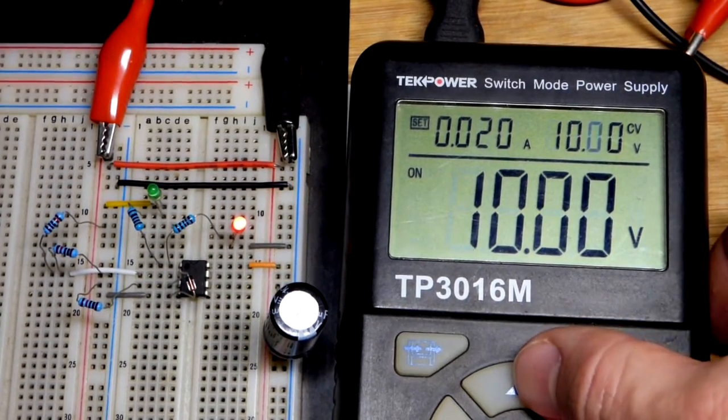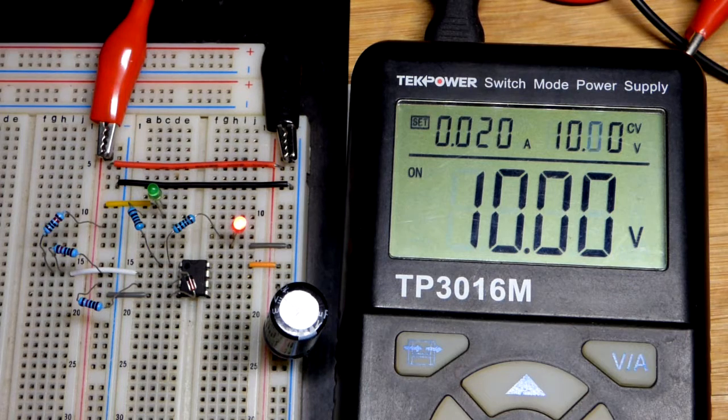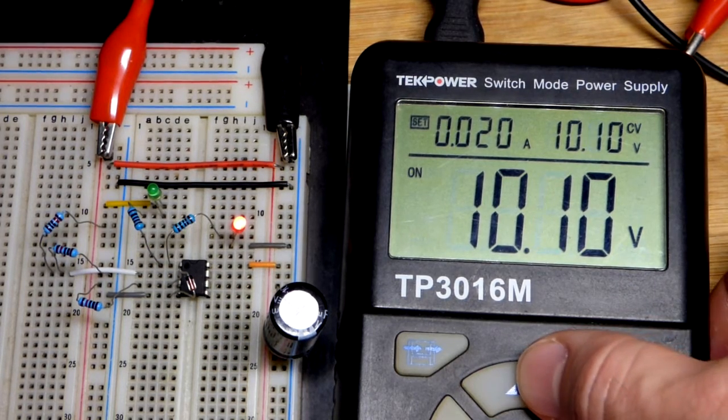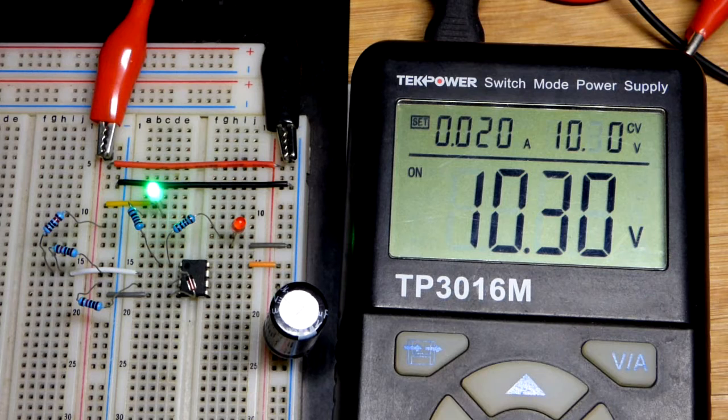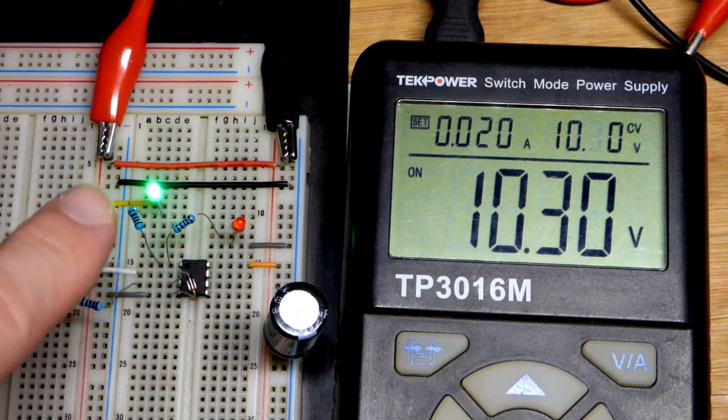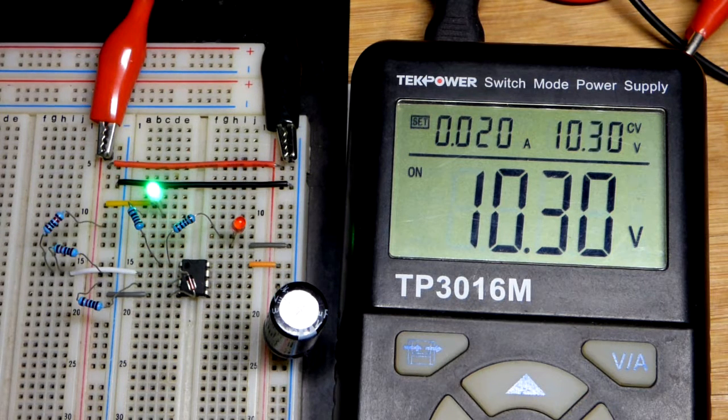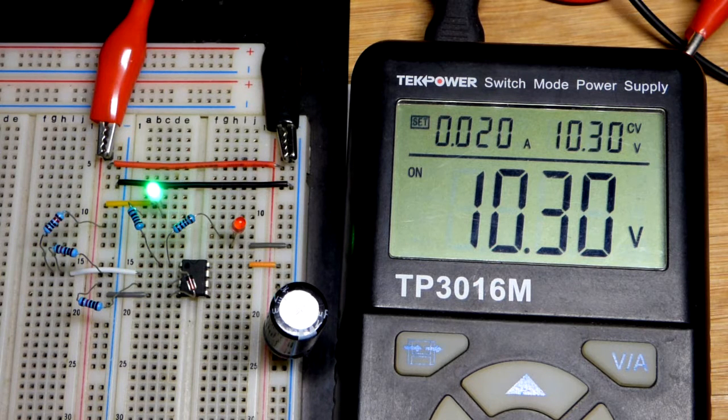But in any case we're keeping this one simple. So we raise the voltage now above 10.2 there. We got back to green. This kind of indicates that the battery is higher than the level that we set.